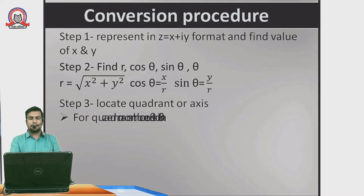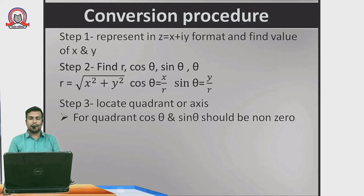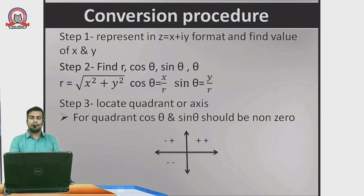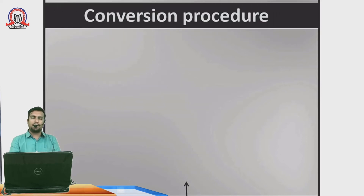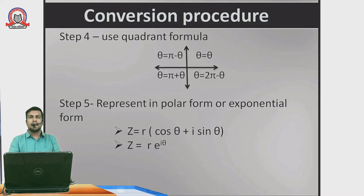In the last lecture (Part 6) we located quadrant positions. In this lecture we handle points on the axes. The condition for quadrants is that cosθ and sinθ must both be non-zero. If either is zero, the point lies on an axis. We check which value is zero to determine which axis and which angle applies. The sign combinations (+ +, − −, + −) were used for quadrant location; today we focus on axis cases.